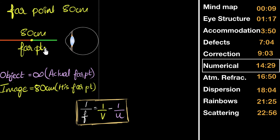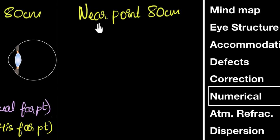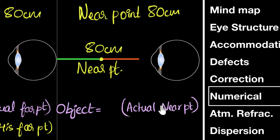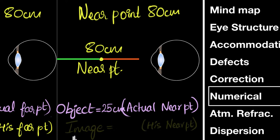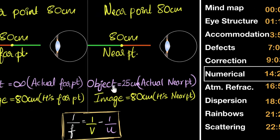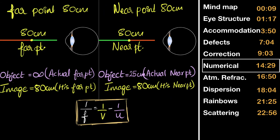Similarly, if a person's near point is 80 centimeters, their far point is fine but the near point has been shifted. To correct it: an object at the actual near point of 25 centimeters should form its image at the person's near point of 80 centimeters. We apply the lens formula, find the focal length and power, and the sign tells us the nature of the lens.